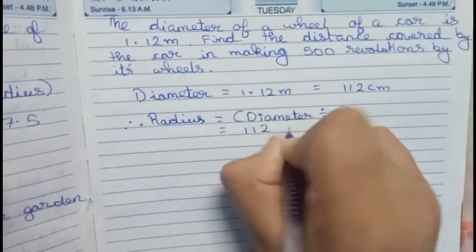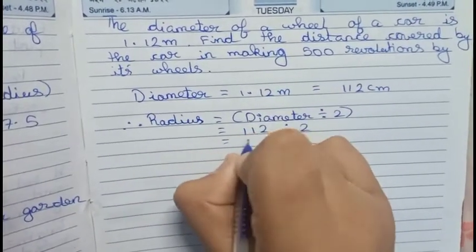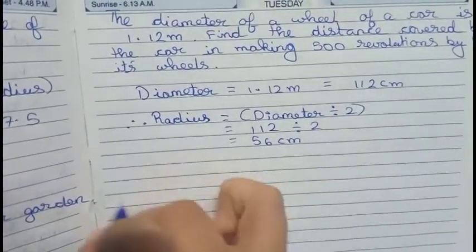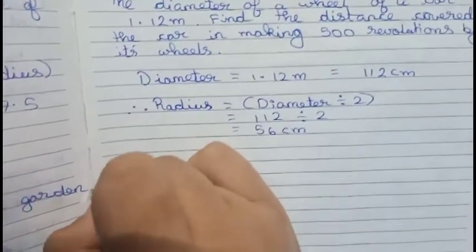So this is our radius. Now we find our circumference. Therefore circumference equals to the formula 2 times pi times radius.